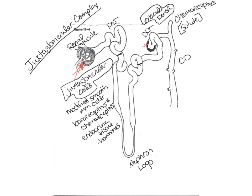We will talk more about the juxtaglomerular complex and the hormones secreted from the juxtaglomerular cells in the next video. That ends our first video on the anatomy of the kidneys. We will continue in the next video and talk about the function and physiology of the kidneys.